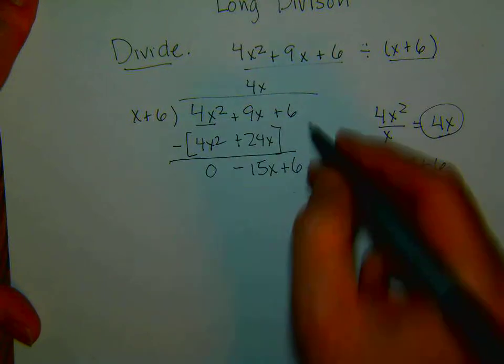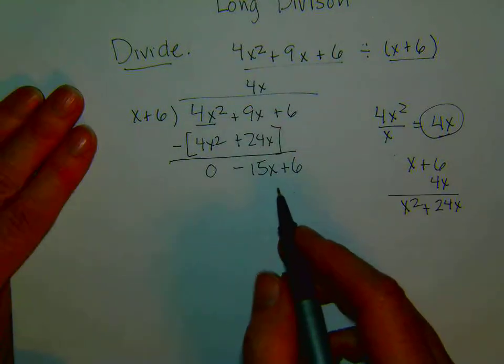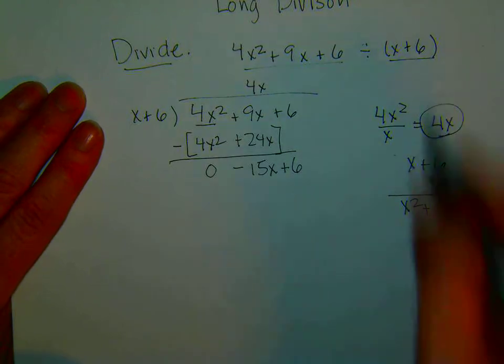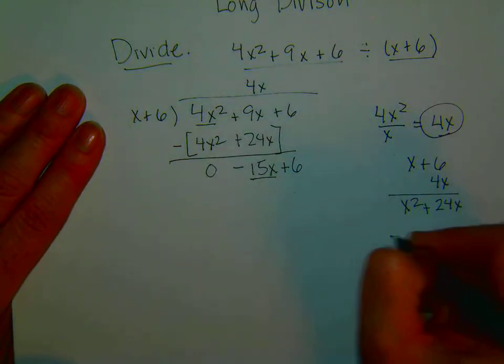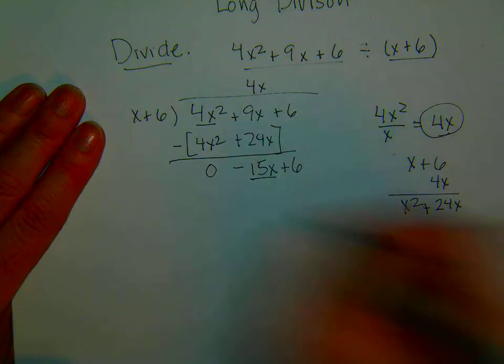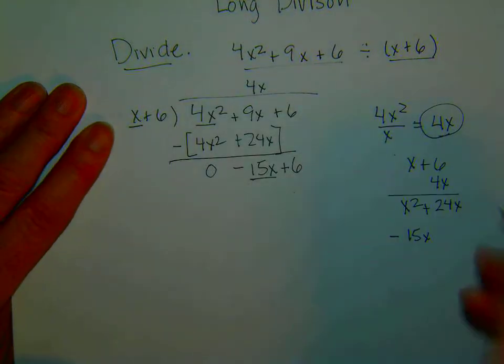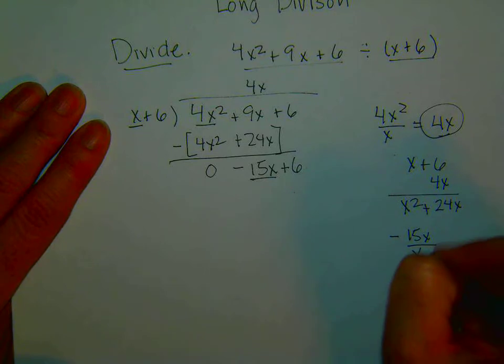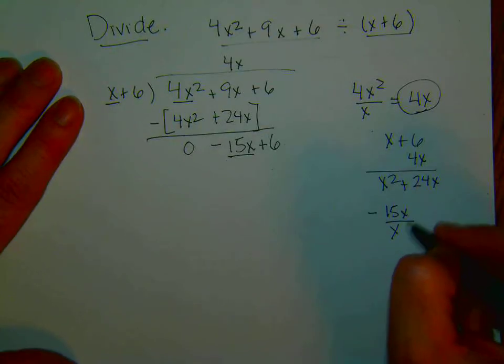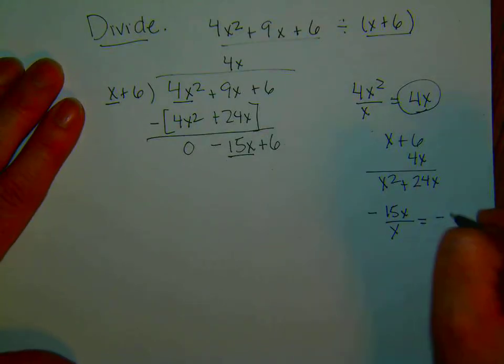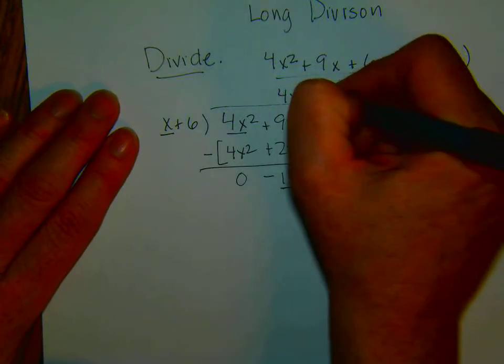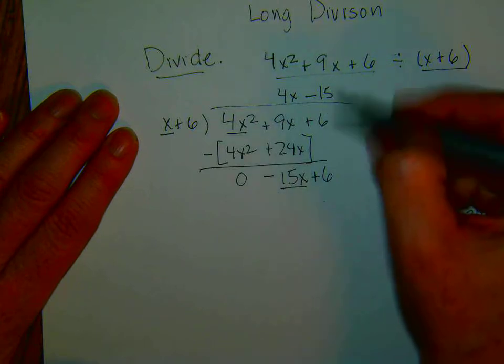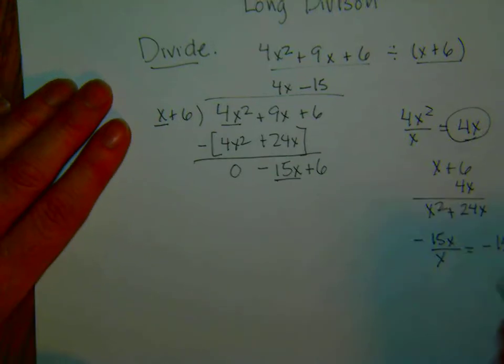So now we start the process all over again. We divide. And what do we divide? We divide negative 15x by the first term of the divisor, by x. Negative 15x divided by x is negative 15. So we put that in the proper place, minus 15, over the place of the same degree.